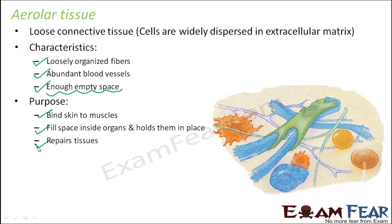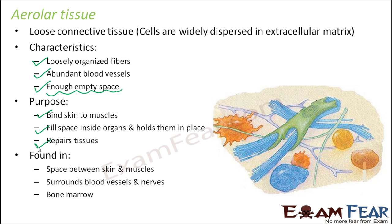Sometimes the appearance of areolar tissue becomes similar to dense connective tissue — not always, but sometimes the empty space is not that much, so it looks like dense connective tissue, though it is actually loose connective tissue. It is found in the space between skin and muscles, surrounds blood vessels and nerves, and in bone marrow.